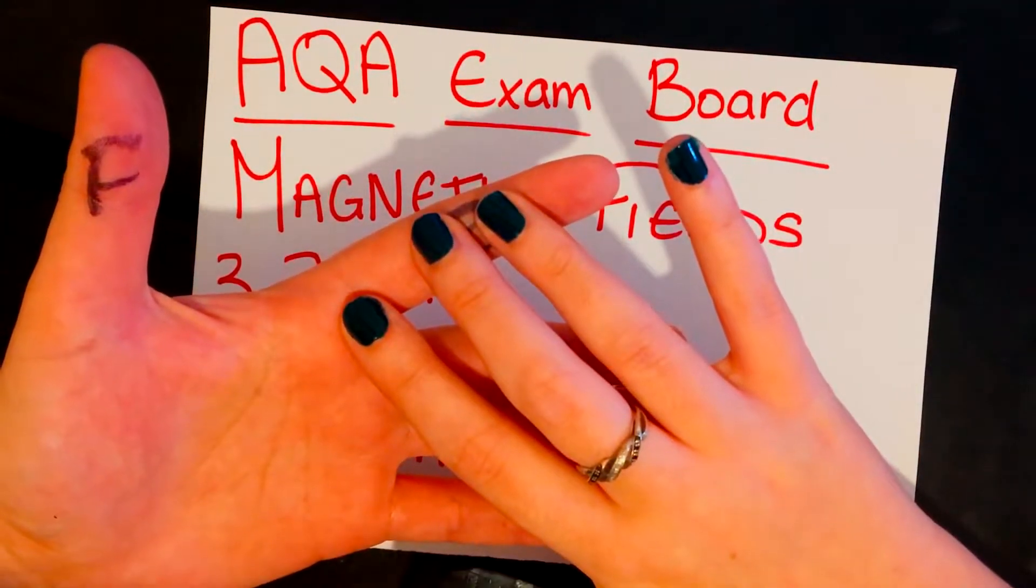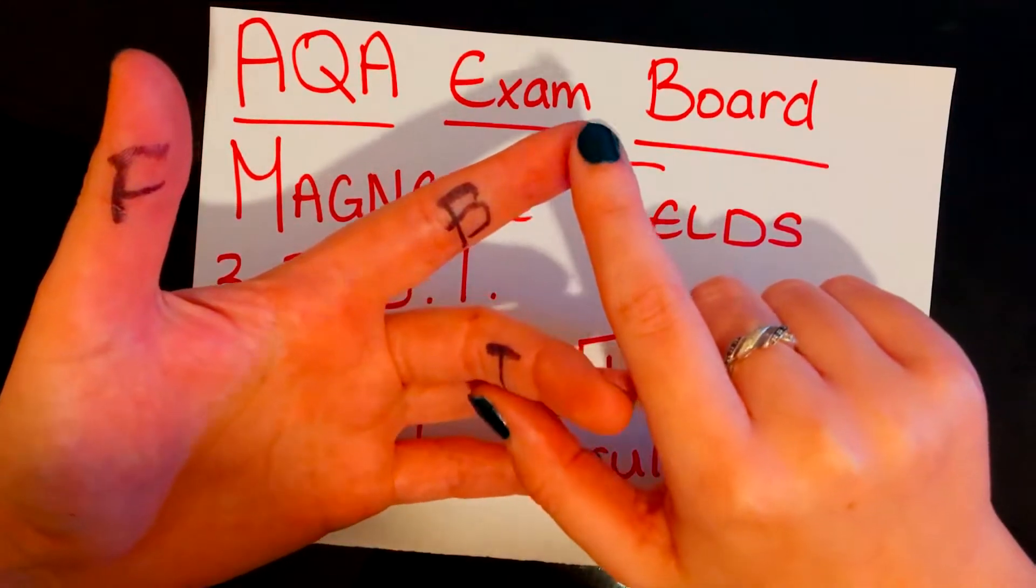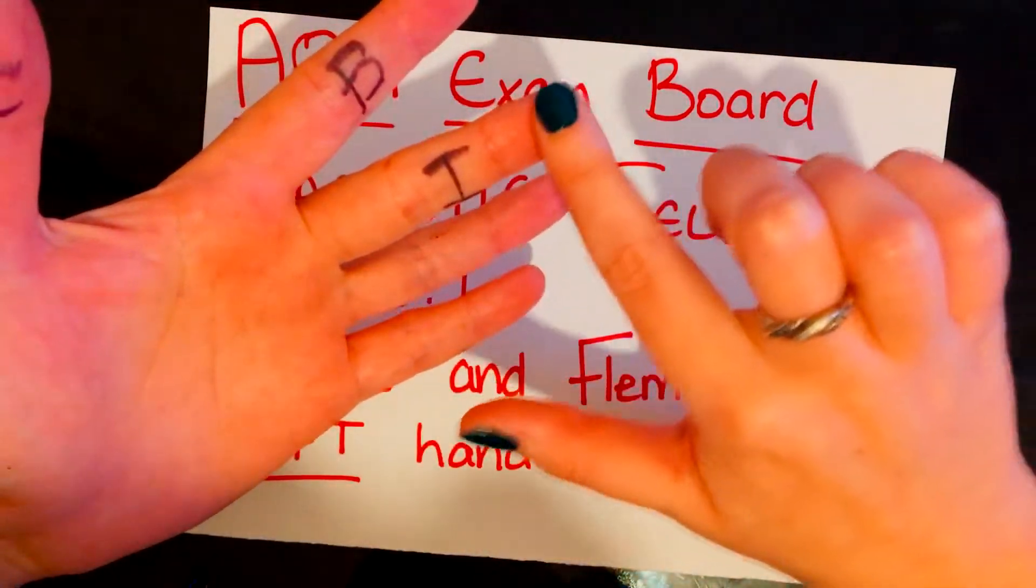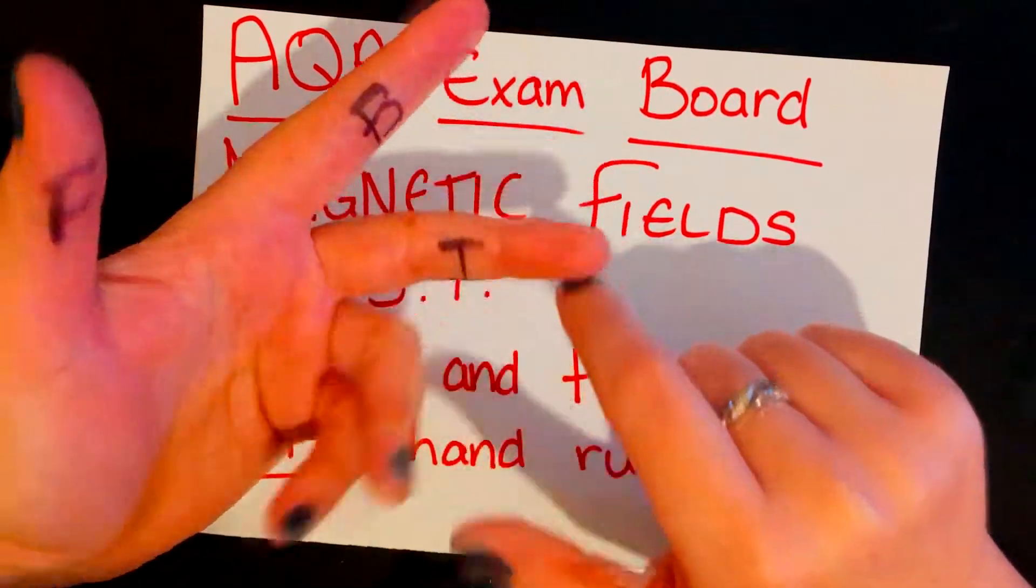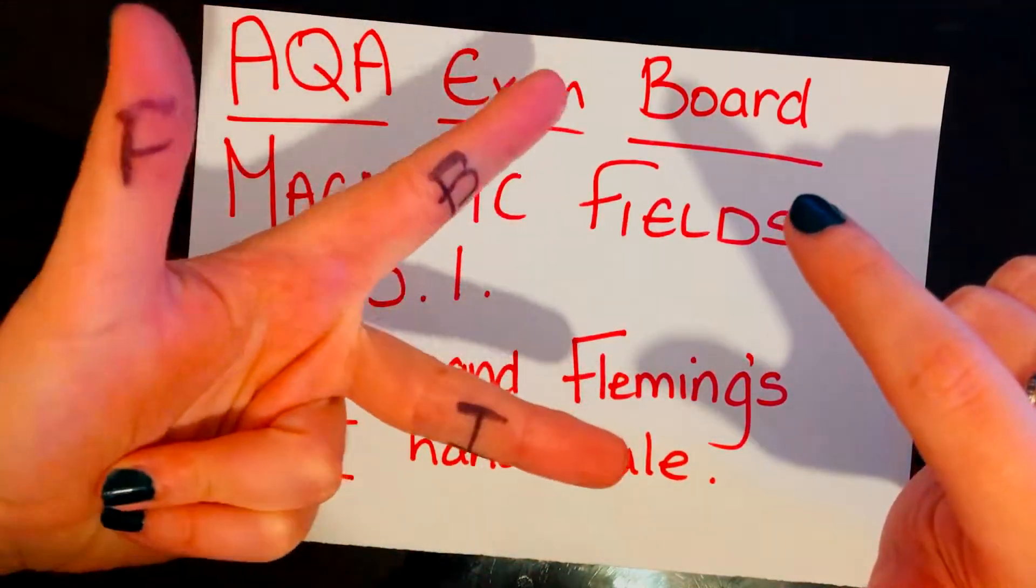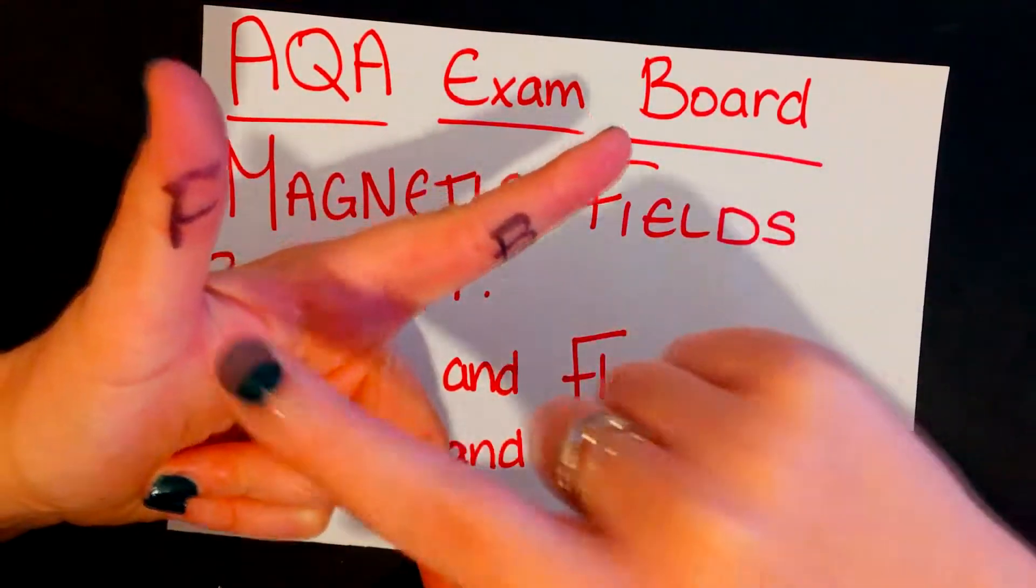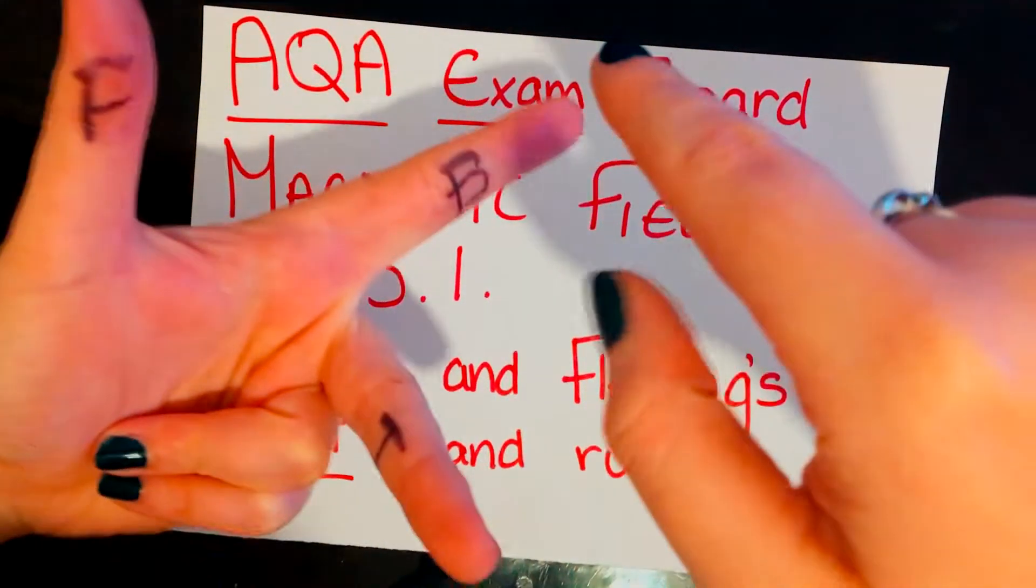B, your magnetic field, so first finger is your field, and remember it always goes from north to south. Second finger is your current, and remember that always goes from positive to negative. So we take this kind of stance with our hand, and each finger should be at 90 degrees to the other, like this.